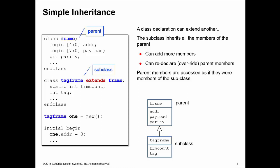When I declare an instance one of TagFrame, when I access the properties of the instance one, the parent properties, the members which are inherited from the parent, are accessed as if they were declared in the subclass itself. So one.addr here, I access the addr property directly from the one handle and it's actually invisible to the user where this declaration comes from.